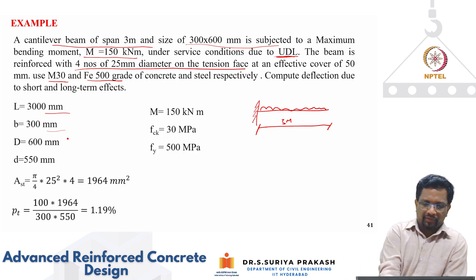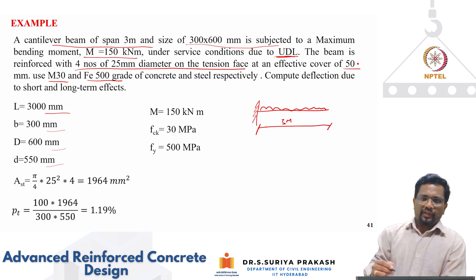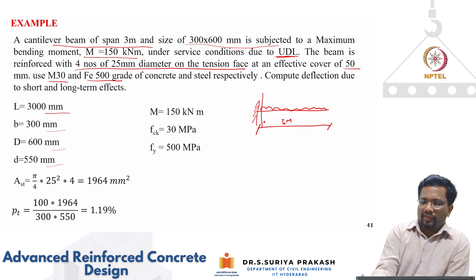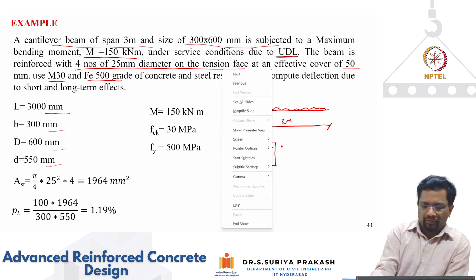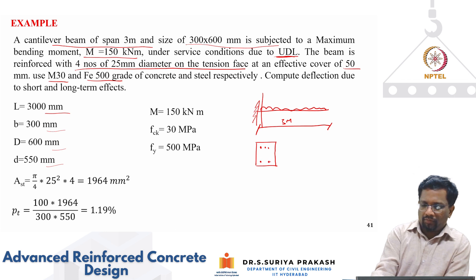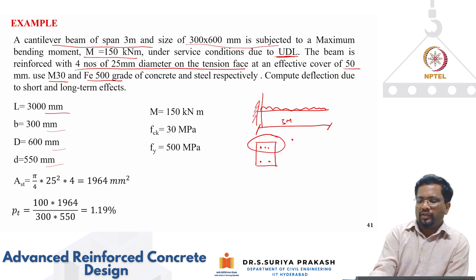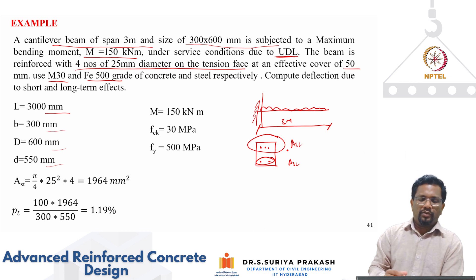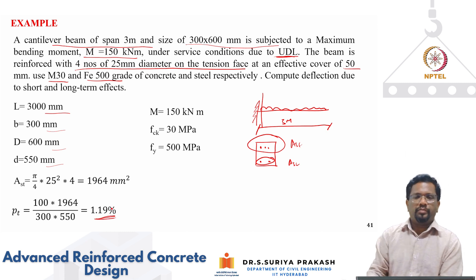The input parameters are given. Cover is 50 mm, so effective depth is 600 minus 50 which is 550 mm. Area of steel is four tension bars — since this is a cantilever, steel is at the top. AST works out to 1964 mm². The percentage of tension steel Pt is 100 × 1964 divided by B × D, which gives 1.19%.